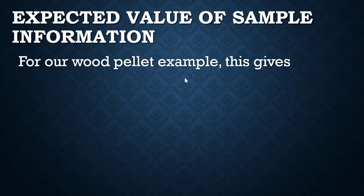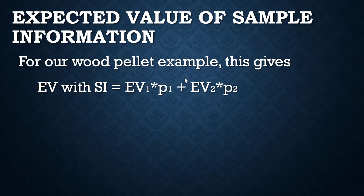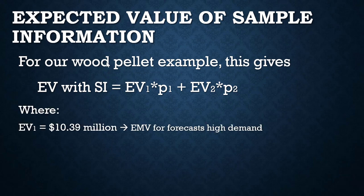Let's look at the wood pellet example and examine the numbers. The expected value with sample information uses a specific formula, which we'll make sense of with this actual example. We're going to talk about two possible forecasts: either the forecaster forecasts high demand, or not.